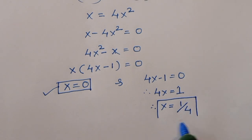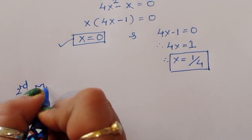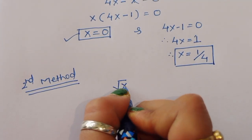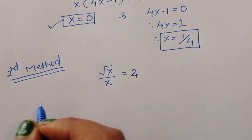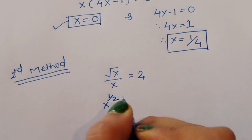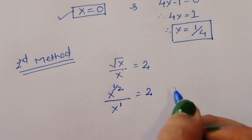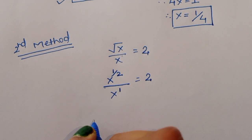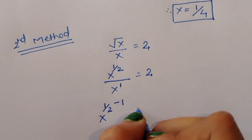So x equals 1/4 is the second solution. Now, second method. The question is square root of x divided by x is equal to 2. Using the second method, we write square root of x as x to the power 1/2. So we have x power 1/2 divided by x power 1 is equal to 2.